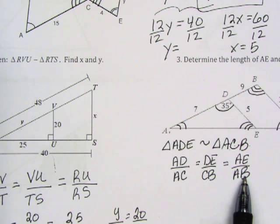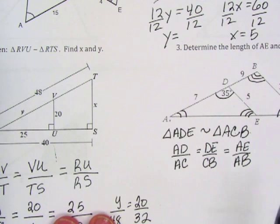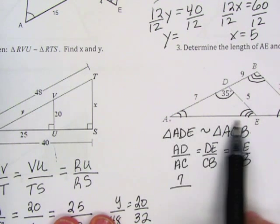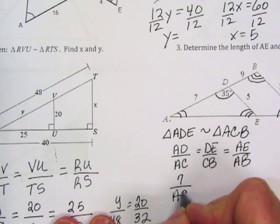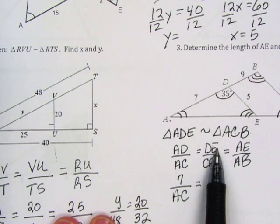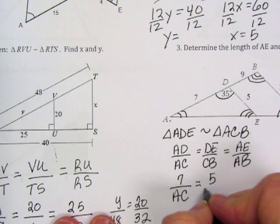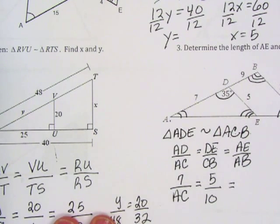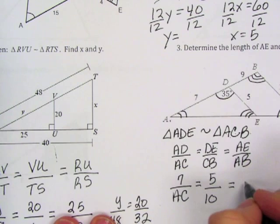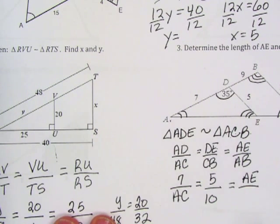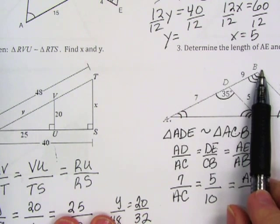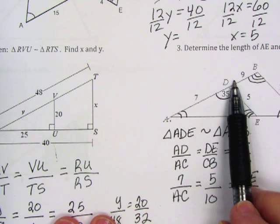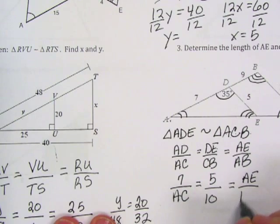Now I'm going to go to my diagram and I'm going to fill in the information given to me. So AD has a 7 on it. AC has nothing on it, so I'm just going to write AC. DE has a 5 on it, and CB has a 10. AE, again, nothing on AE, so I'm just going to leave that as AE. And AB has two numbers on it, a 7 and a 9, and what will I do with those two numbers? I will add them together. 7 plus 9 is 16.